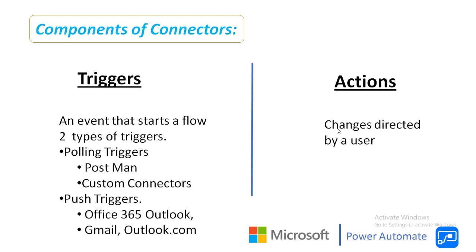Whenever a new mail arrives or whenever a mail has been flagged, the trigger will listen for data on the endpoint and then the particular actions will happen. Now we will talk about actions. Actions are changes directed by a user. For example, you would use an action to insert, update, or delete data in an Excel file.